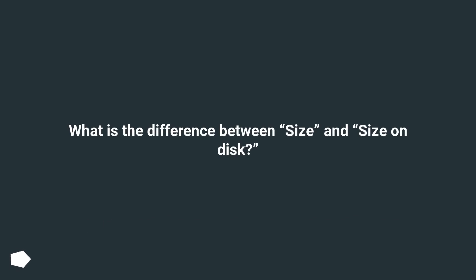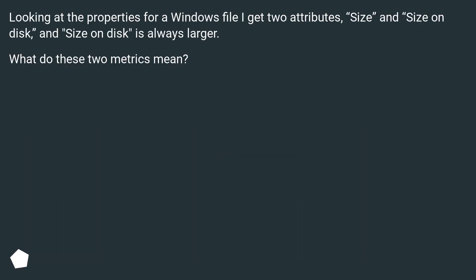What is the difference between size and size on disk? Looking at the properties for a Windows file, I get two attributes: size and size on disk, and size on disk is always larger. What do these two metrics mean?